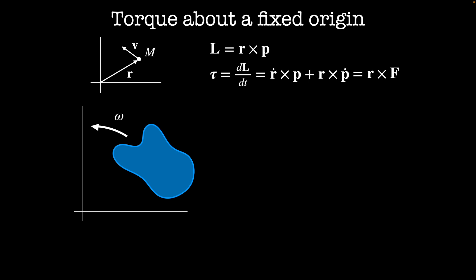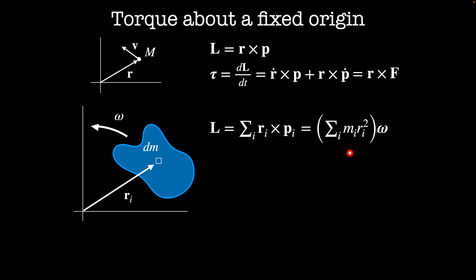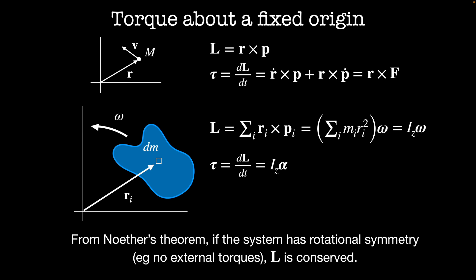What if instead of a point-like particle we have an extended body undergoing a torque, starting with angular speed omega about the origin? For an infinitesimal mass element dm at distance r_i, the angular momentum is the sum over i of r_i cross dm times v_i. Writing velocity in terms of tangential velocity r_i times omega gives the moment of inertia I_z times the angular velocity vector omega. The torque is then I_z times the angular acceleration alpha. As Noether's theorem tells us, if a system has rotational symmetry, angular momentum is conserved; an external torque breaks this symmetry.